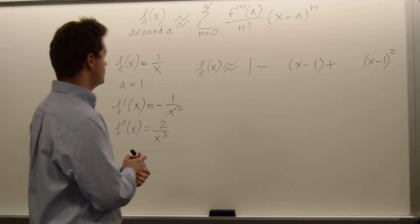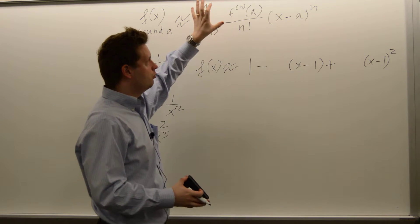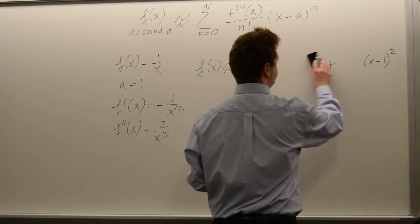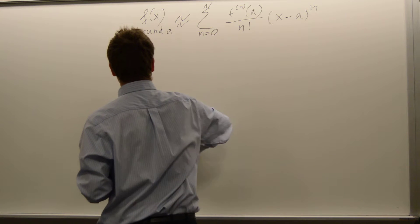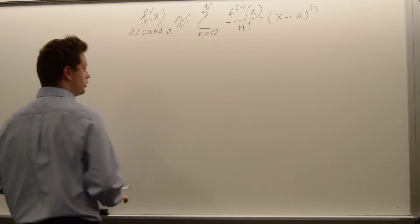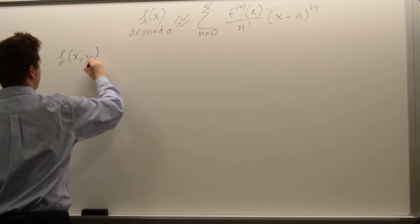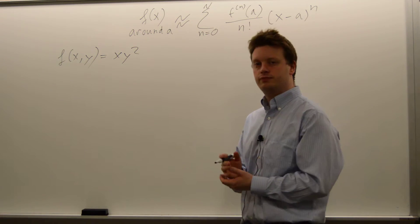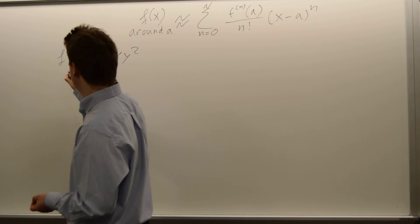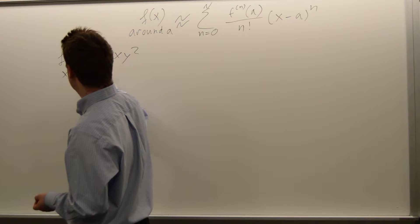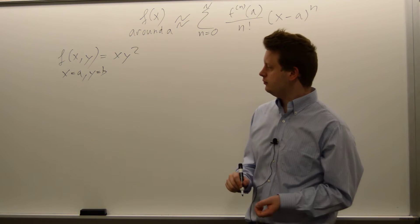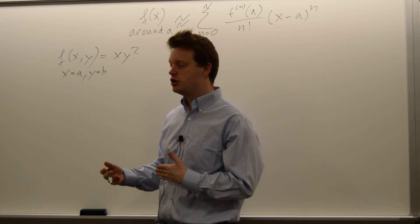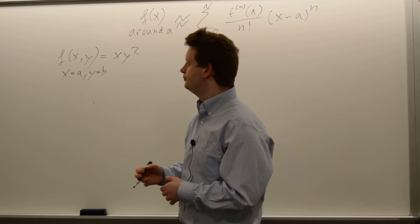Let's go to the two variable case. We will still use this formula with some small changes, but choose a different function. Assume we have the function f of x, y equal to x times y squared — a relatively simple function — and we want to approximate this function at x equals a and y equals b. Note that with two variables, we need to specify the approximation point for both variables.